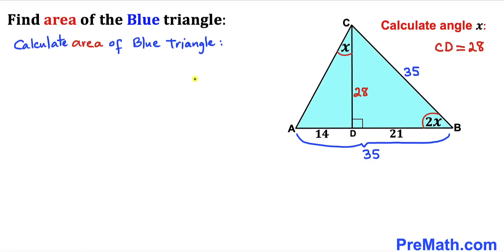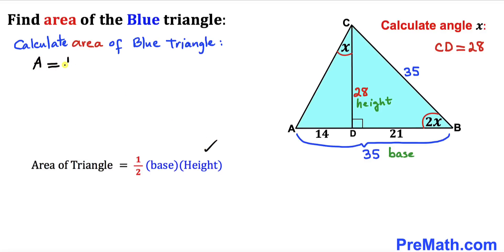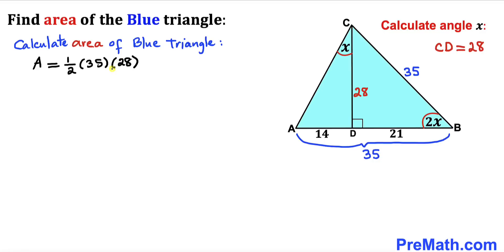Now let's calculate the area of the blue shaded triangle ABC. Recalling the area formula: area equals one-half times base times height. The base is 35 units and the height is 28 units. So the area equals one-half times 35 times 28, which gives us 490 square units.